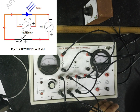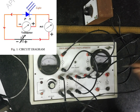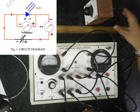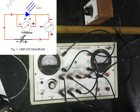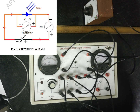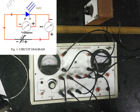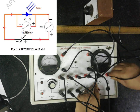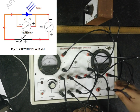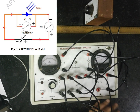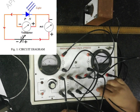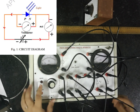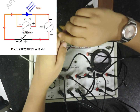Now we connect the diode. The positive of the diode will go to the negative of the circuit, such that it is a reverse bias connection. Then connect it to complete the circuit. Now the light source will be placed here.